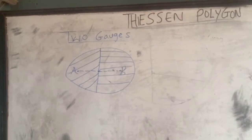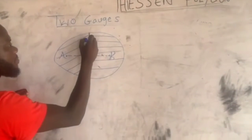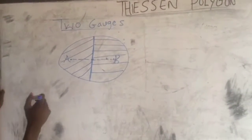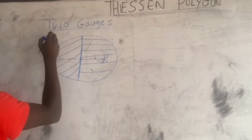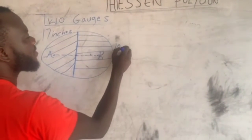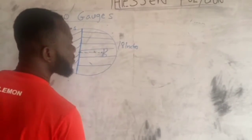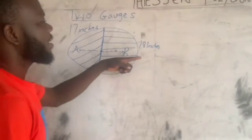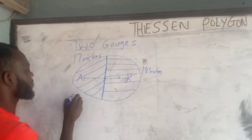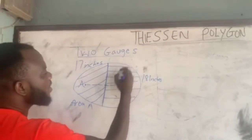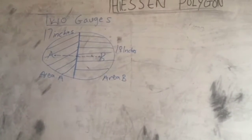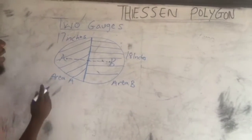When we want to find the average precipitation, from this part through to this part becomes region B, and from this part through to this part becomes region A. So maybe the rainfall is 17 inches for region A and 18 inches for region B. The whole area for the shaded region for portion A becomes area A, and the shaded region for portion B becomes area B.